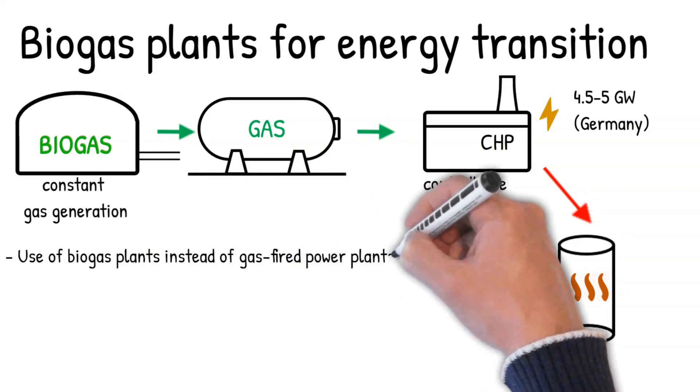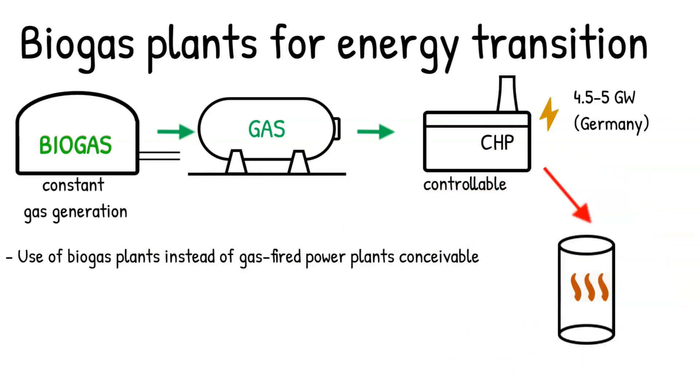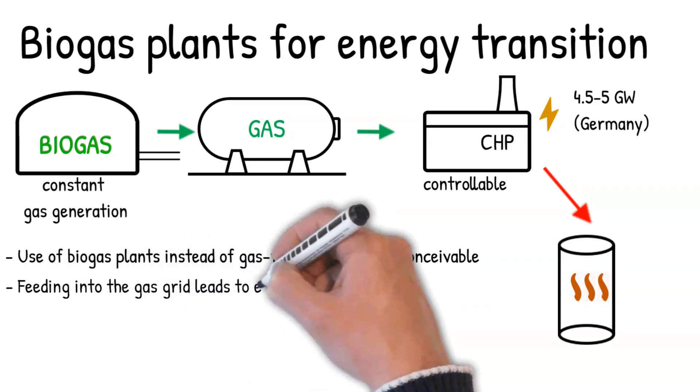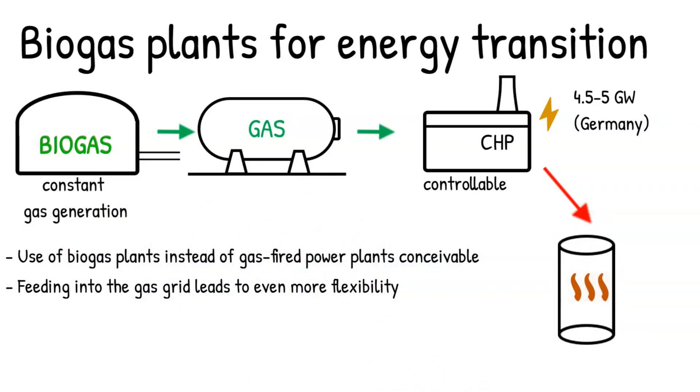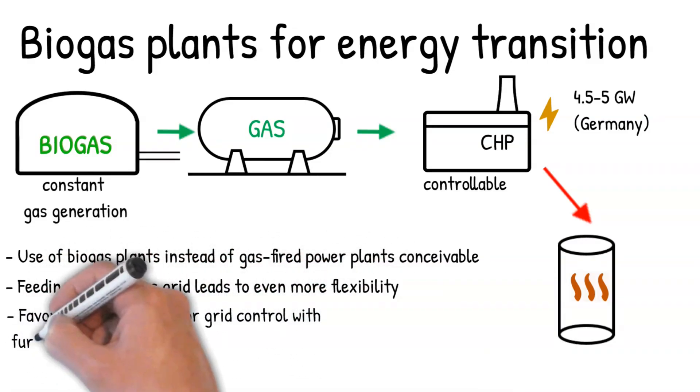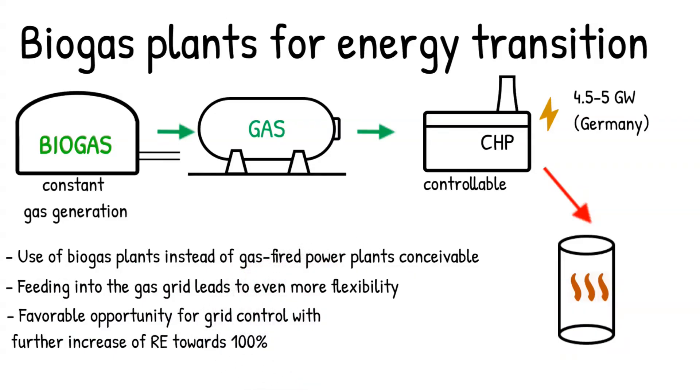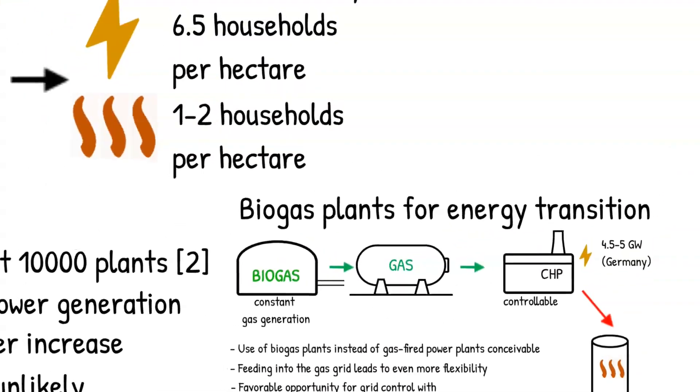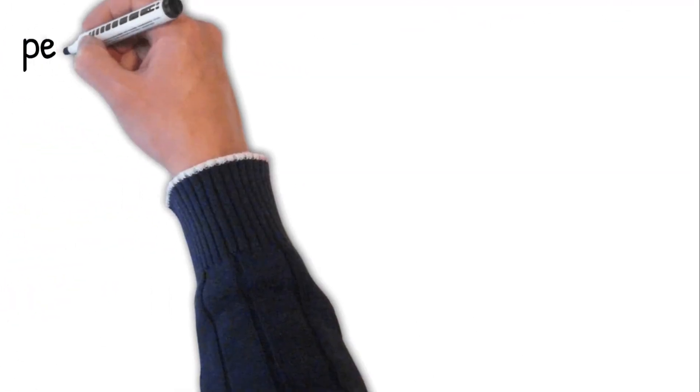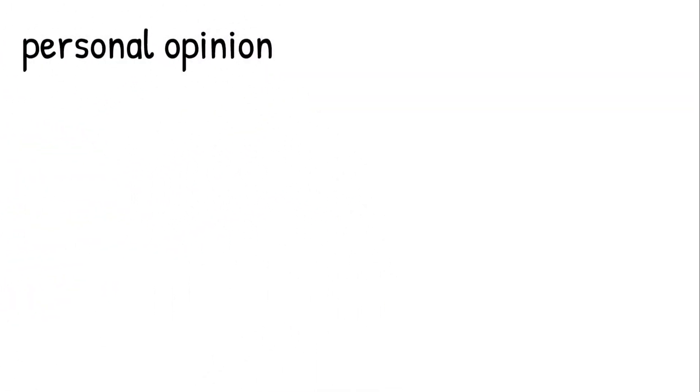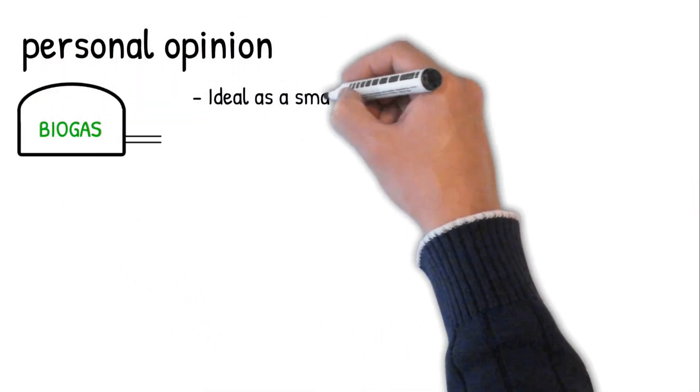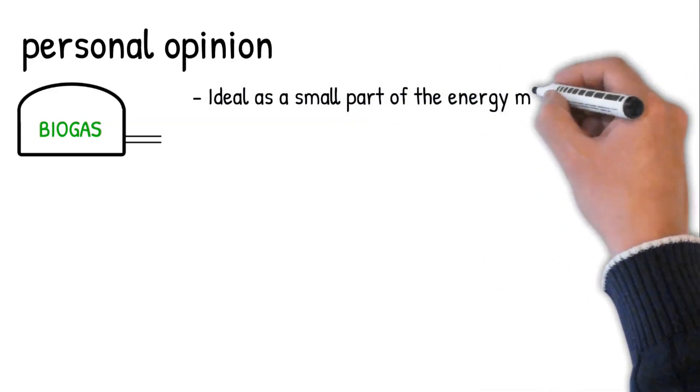For biogas plants that feed into the natural gas grid, the variability is even higher and long-term storage is also easily possible. Thus, biogas plants offer an inexpensive and reasonable possibility to operate the grid safely and reliably in case of a further increase of the PV and wind share in Germany. My personal opinion is that biogas plants work very well as an admixture in the energy mix in Germany, especially where only biowaste is used that is otherwise not needed.